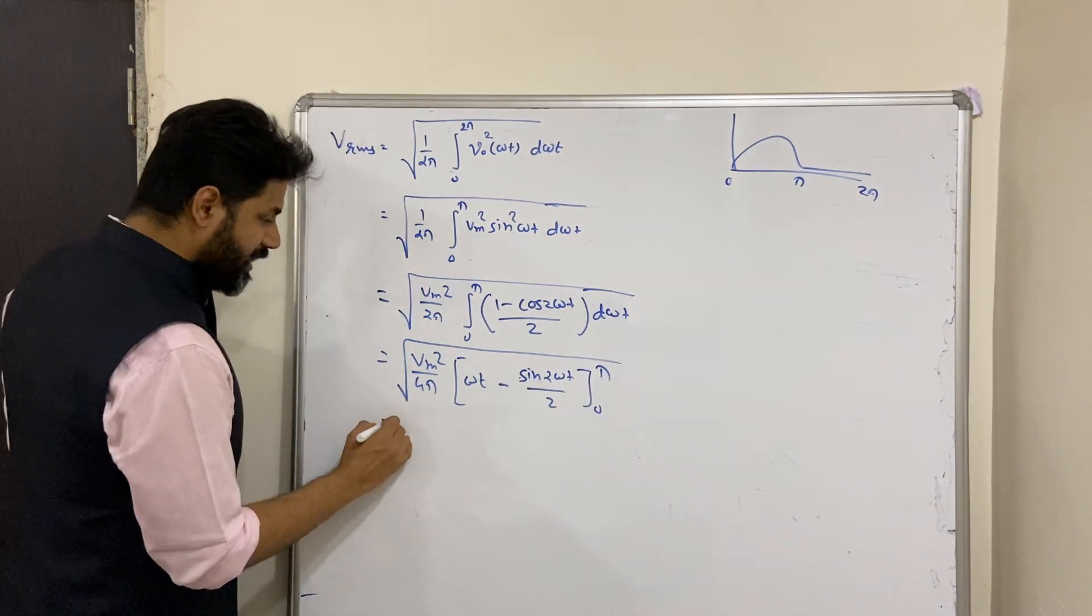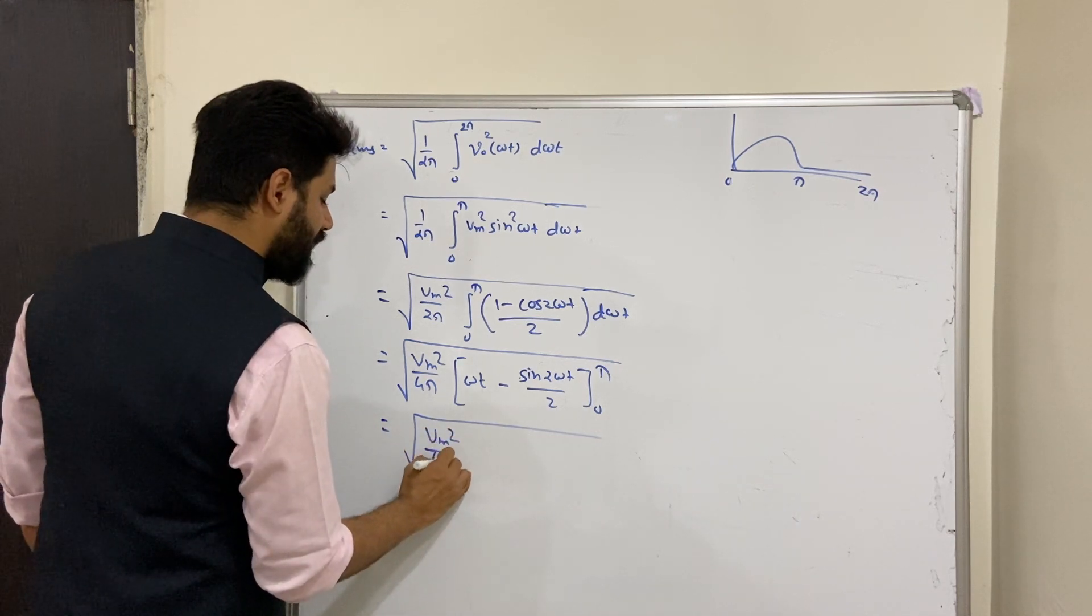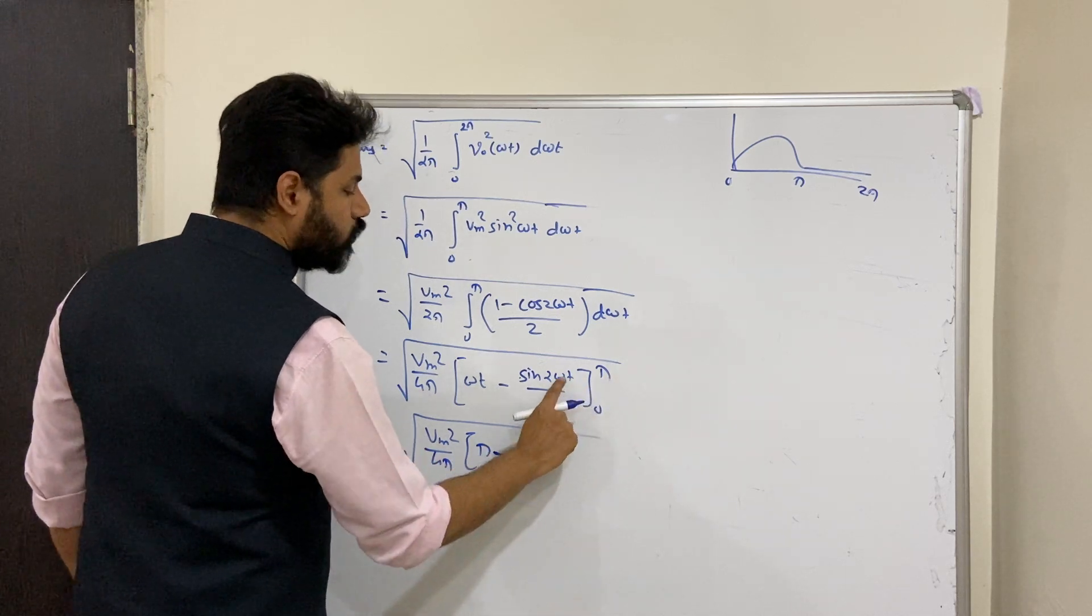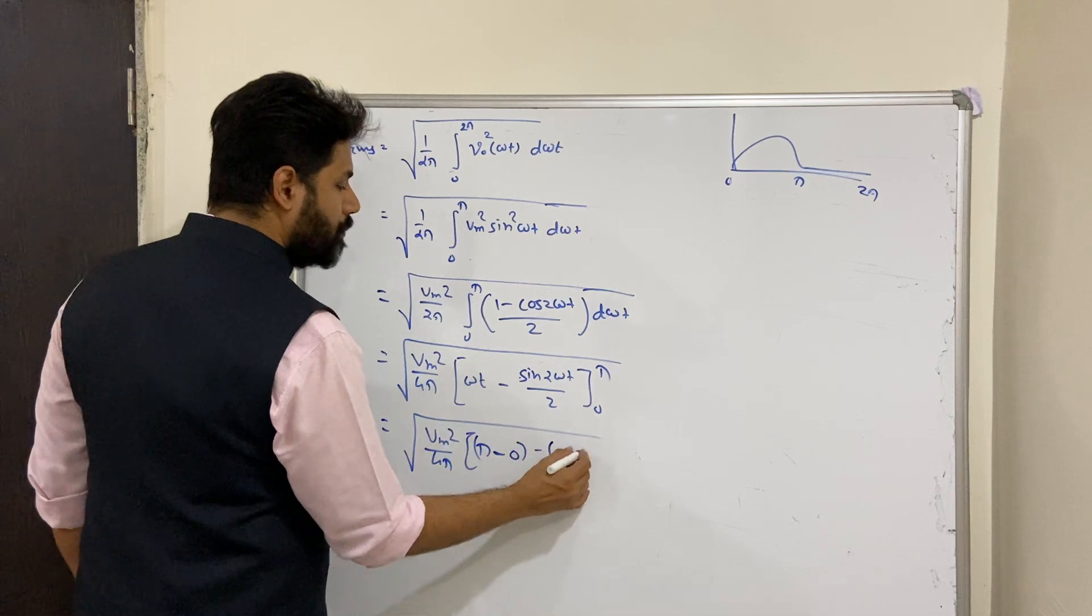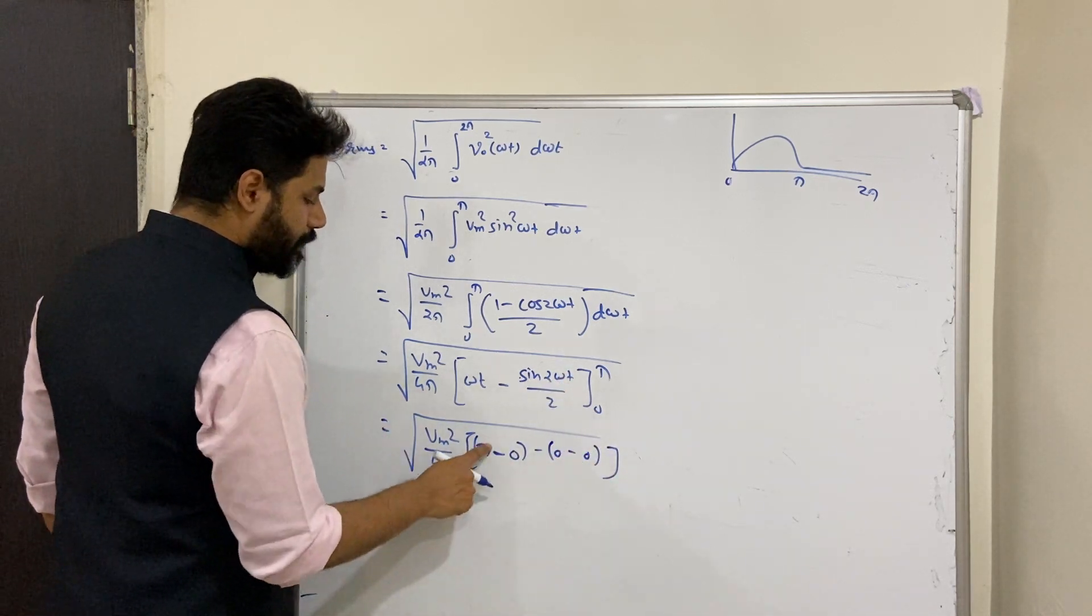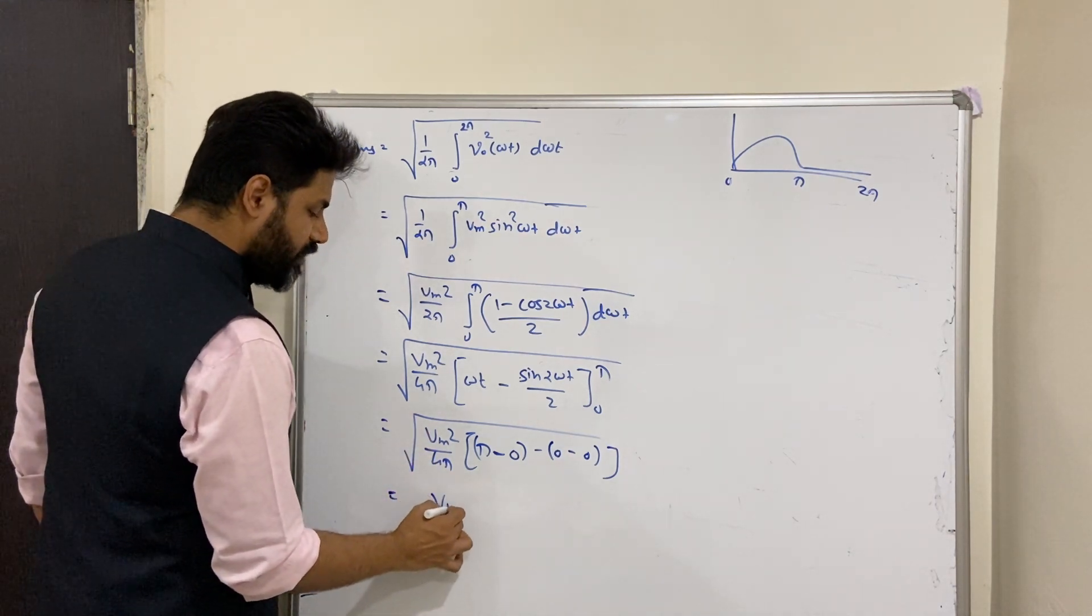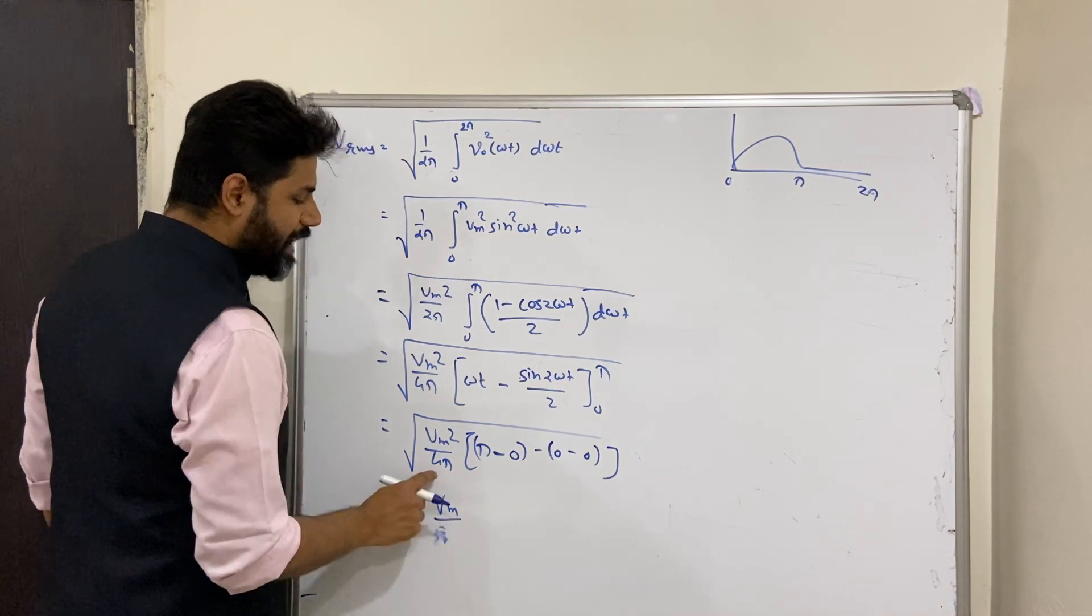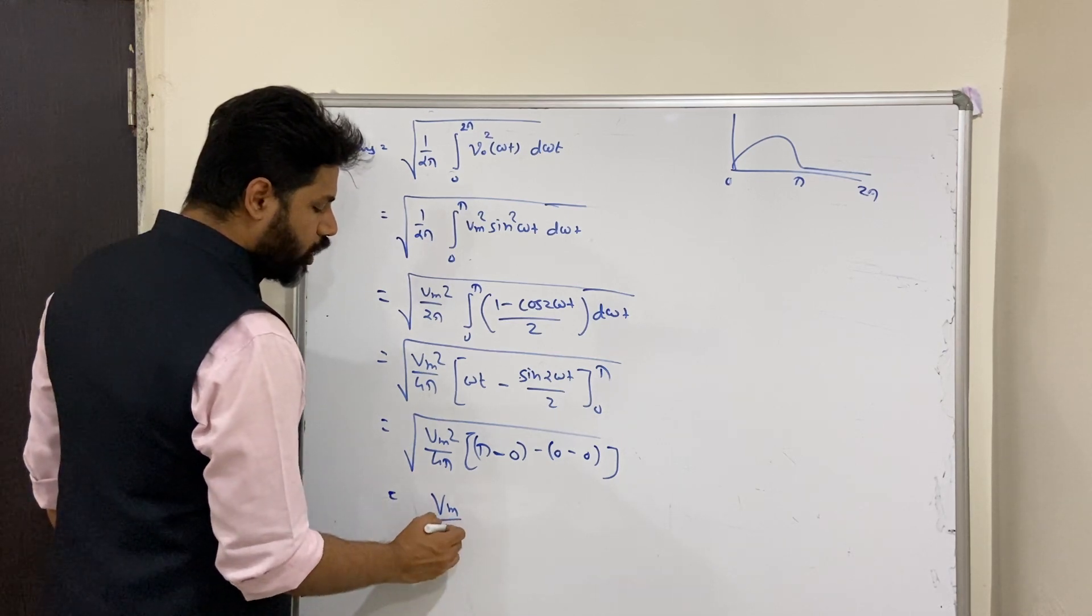So we have got square root of Vm square divided by 4π, upper limit π minus sin 2π zero, minus lower limit 0 minus sin 0 zero. So we have got π over here. π will get cancelled out. We will be having Vm square divided by 4, so root of it is Vm divided by 2.